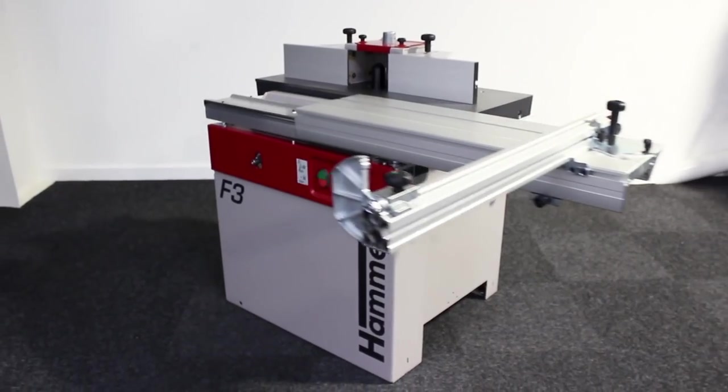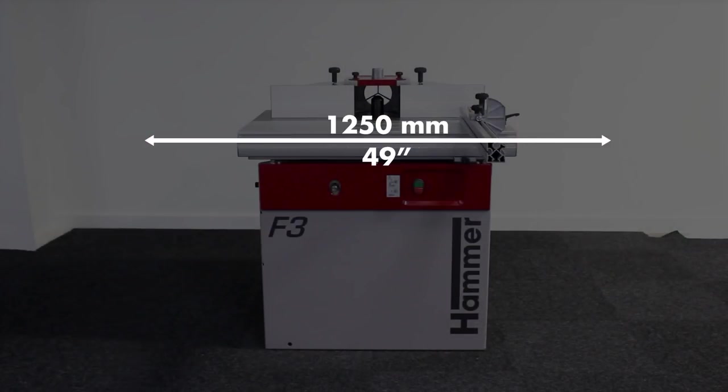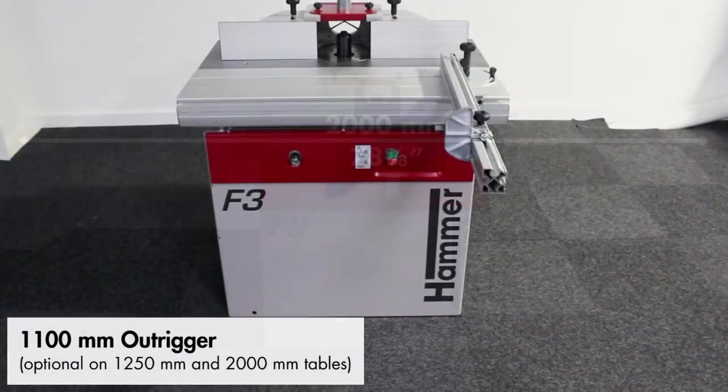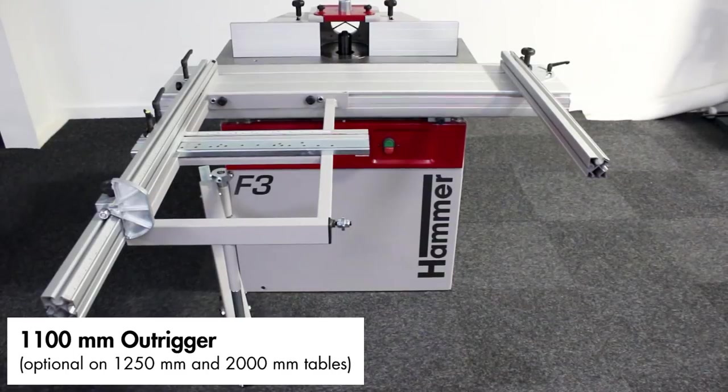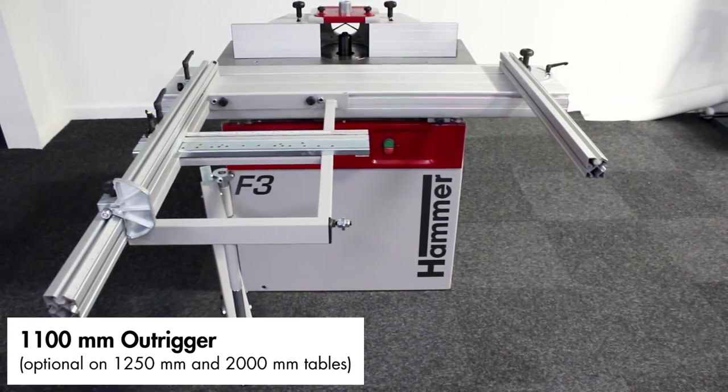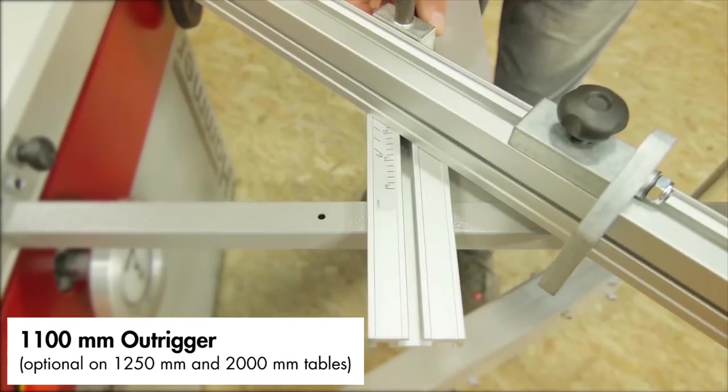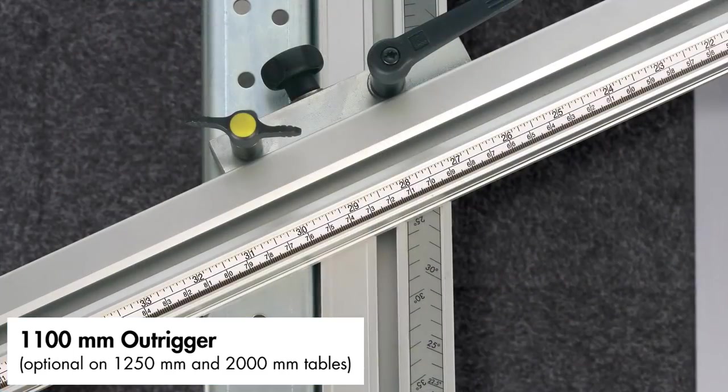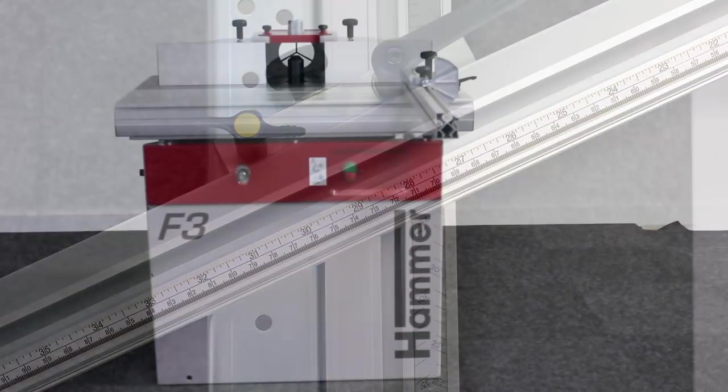The table can be specified at 800, 1250, or 2000 millimeters depending on your requirements. A 1100 millimeter outrigger can also be added which provides excellent support for processing large work pieces. With a number of cross cut fence additions and a precision mitre guide index system available to expand the versatility of the machine.